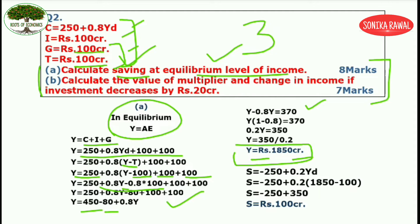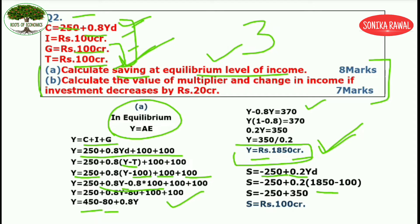Moving further: you have said saving at equilibrium level of income. The equilibrium level of income is 1850 crores. To find savings, we use the saving function derived from the consumption function. Autonomous consumption 250 becomes minus 250 — these are dis-savings. MPC is 0.8, so MPS is 0.2. Yd is written as Y minus T. Put Y as 1850 and taxes as 100. Finally, savings come out to 100 crores.